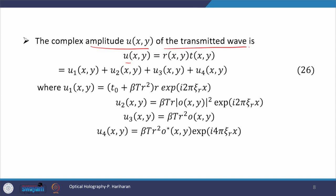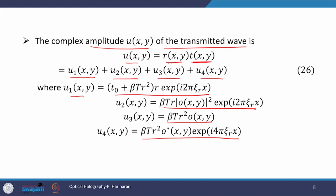The complex amplitude of the transmitted wave is given by the transmission function multiplied by R, the complex amplitude of the reference beam. Multiplying R with t gives a large expression with four terms: u1, u2, u3, and u4. U1 is the directly transmitted reference beam term, u2 involves the halo around it, u3 produces the virtual image, and u4 produces the conjugate or real image.